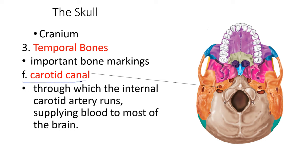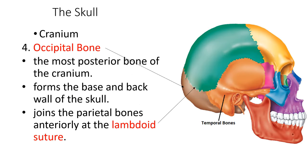We also have the carotid canal — a canal through which the internal carotid artery runs, supplying blood to most of the brain. The carotid artery can be found and palpated at your neck — the one that is beating. It enters here and goes to your brain to supply fresh blood. That is the entrance of the carotid artery.